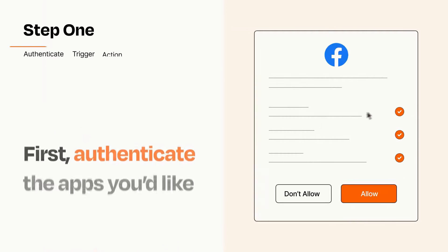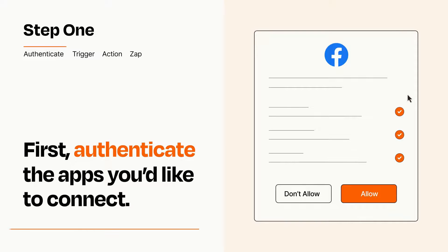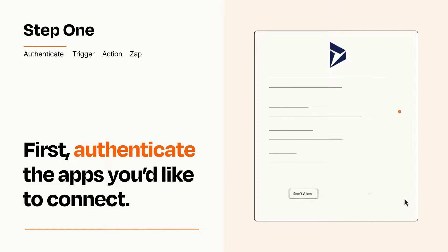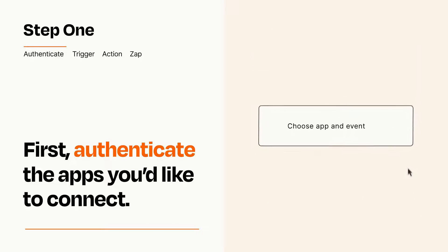It's easy. To get started, you'll just need to authenticate your apps, which takes just a few seconds. Zapier meets industry standards for encryption when connecting with each of your apps.